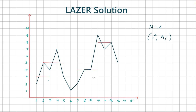A line segment is drawn between every consecutive pair of points. So a line segment is drawn between points (i, a_i) and (i+1, a_{i+1}), and you can see these line segments drawn in dark blue lines. Points having consecutive x coordinates are connected via a line segment.